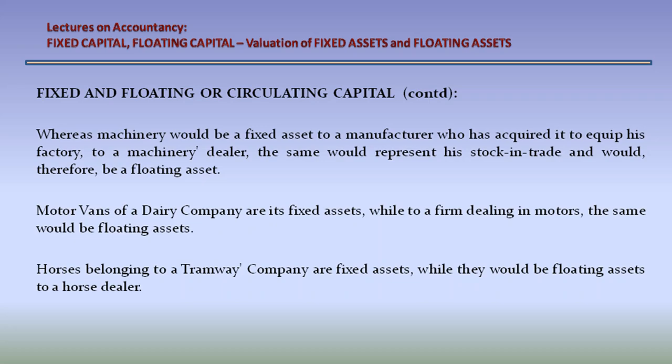Motor vans of a dairy company are its fixed assets, while to a firm dealing in motors, the same would be a floating asset. Horses belonging to a tramway company are fixed assets, while they would be floating assets to a horse dealer.